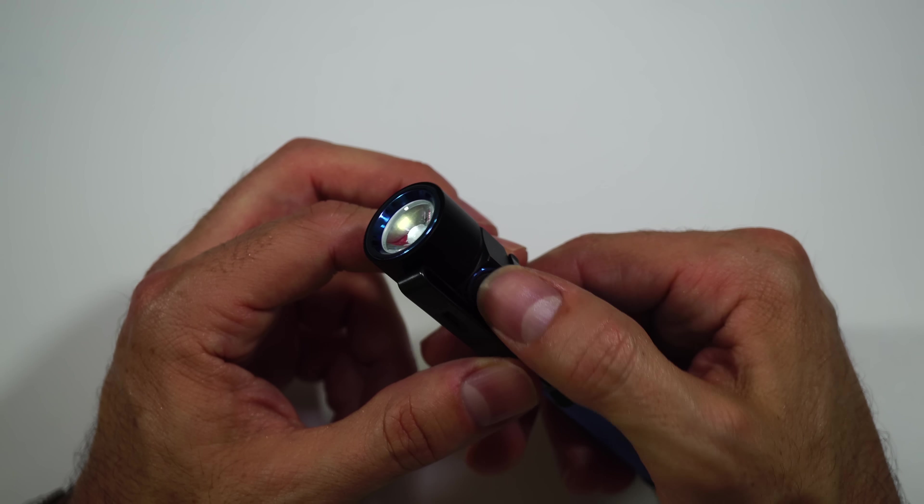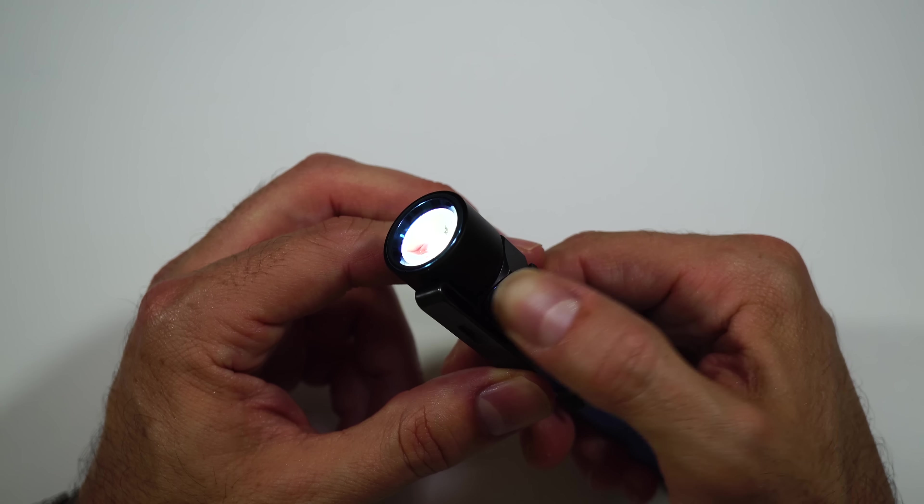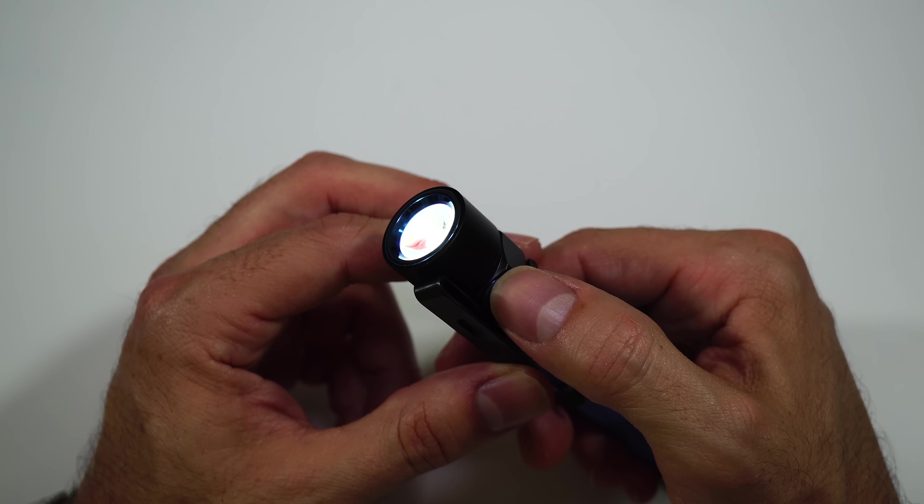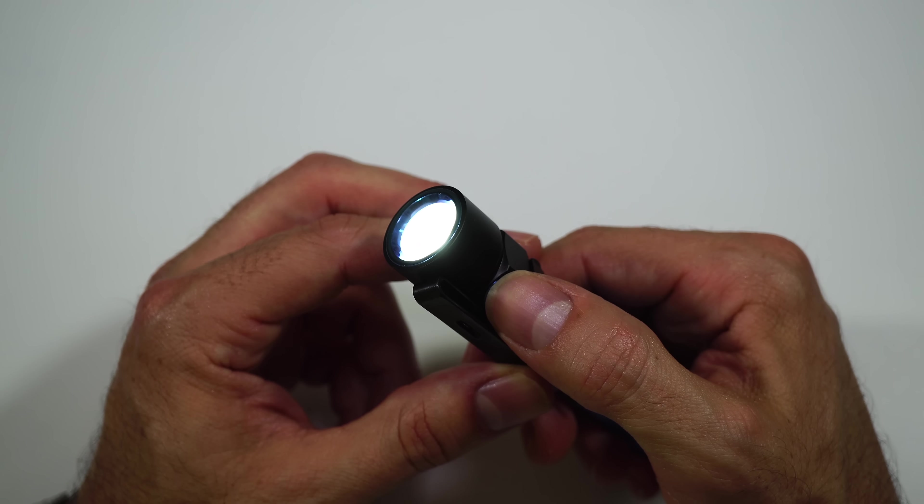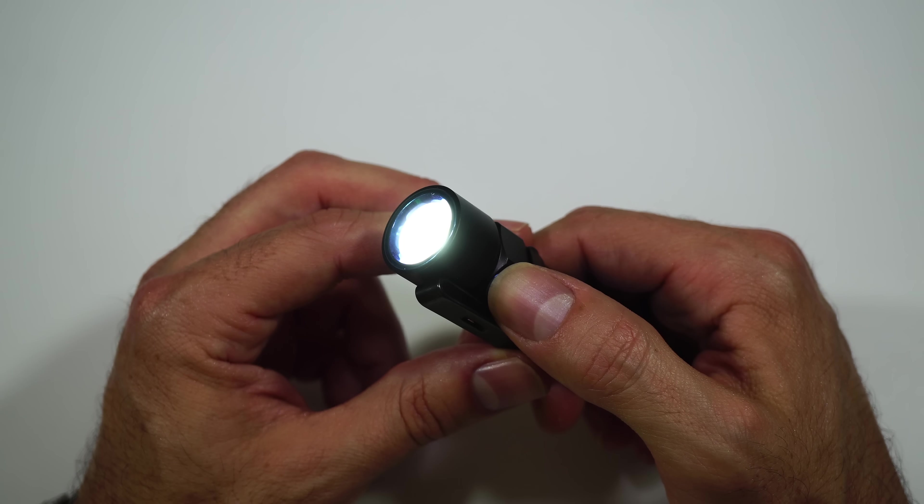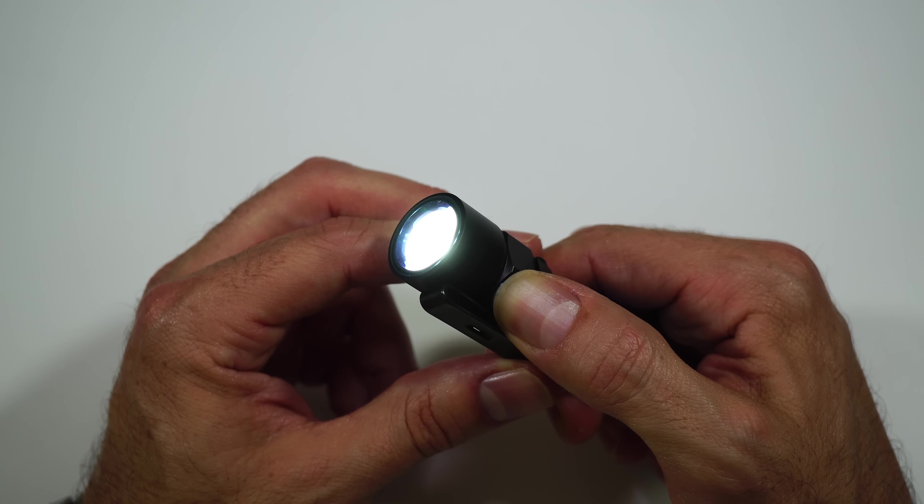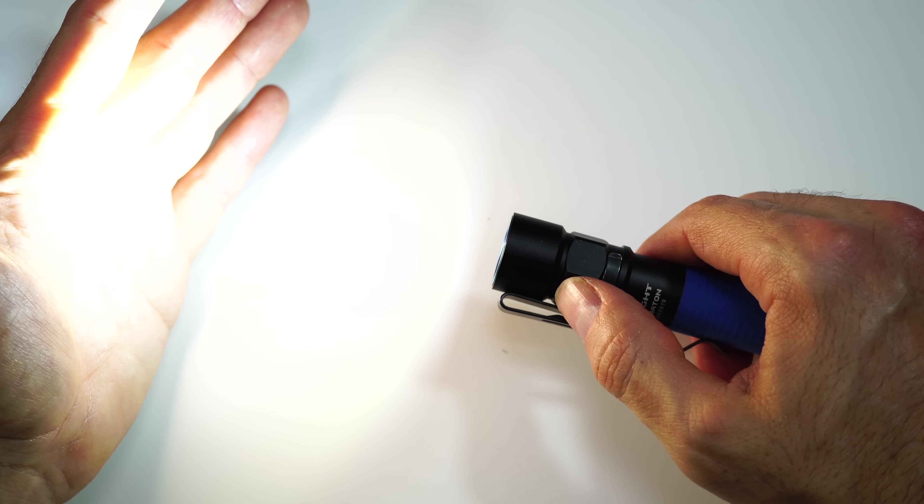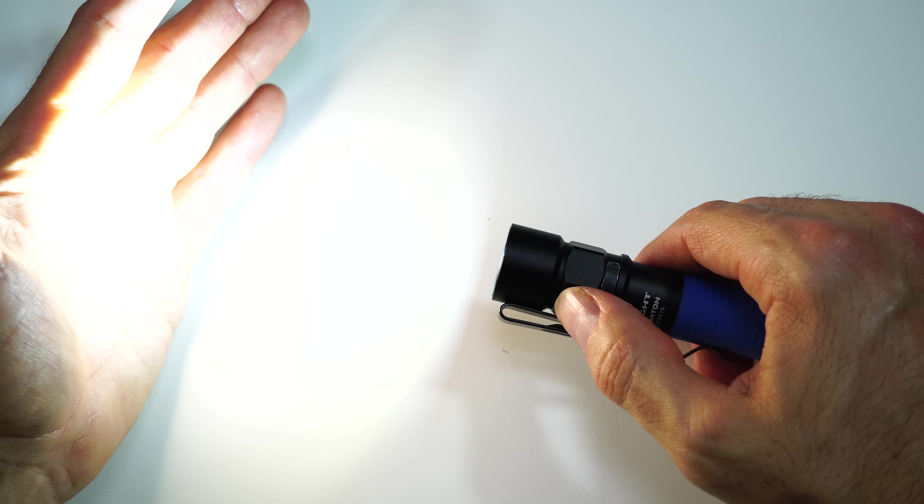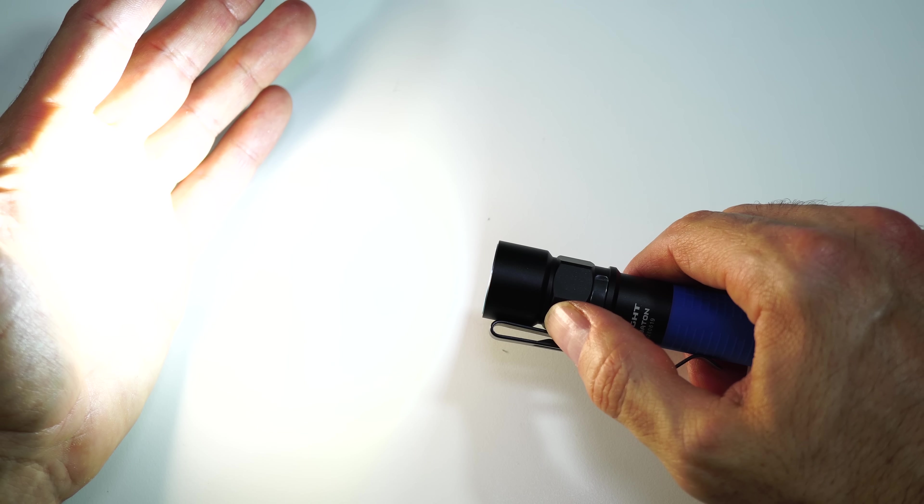And then changing brightnesses, you just hold down on the button. Goes up to that next mode, 10 lumens for 120 hours. Hold down again, 50 lumens for 30 hours, 300 lumens for 4 hours, 40 minutes. And then the turbo of 550 lumens, and it will do that for 4 hours. Then, like I said, after 3 minutes, it will ramp down to that 300 lumen brightness.